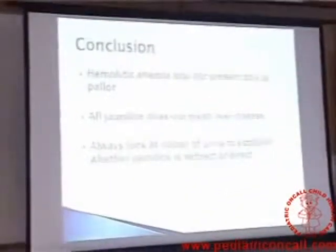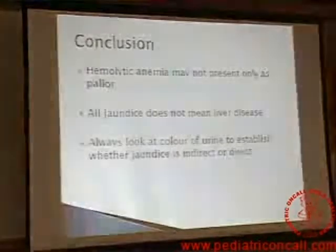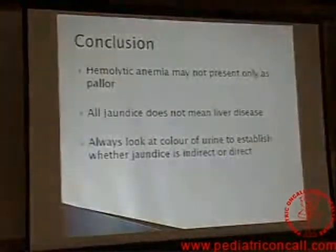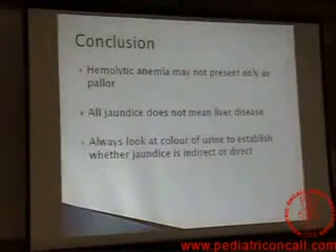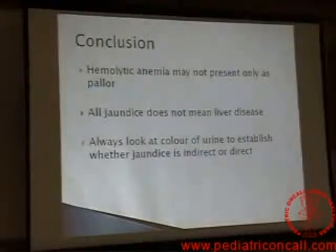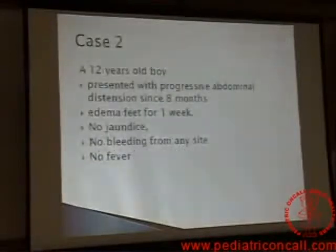So what is our conclusion? What is the moral of the story? That hemolytic anemia may not present as pallor — it may come to you as jaundice. But all jaundice does not mean liver disease. We always look at the color of the urine to establish what kind of jaundice it is — is it a liver disease or is it an indirect, pre-hepatic jaundice?